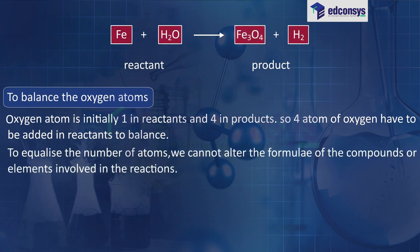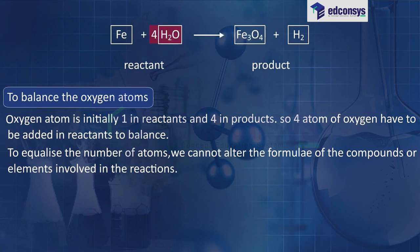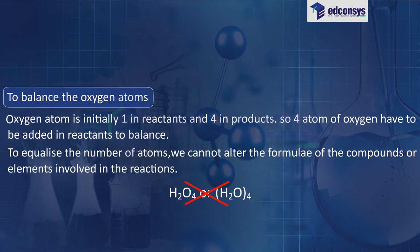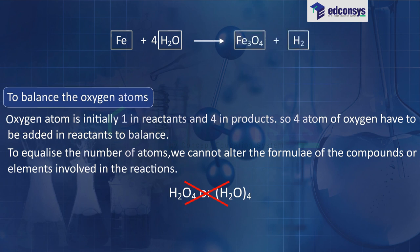So 4 atoms of oxygen have to be added in reactants to balance. To equalize the number of atoms, we cannot alter the formula of the compounds or elements involved in the reaction. To balance oxygen atoms, we put coefficient 4 as 4H₂O, and not H₂O₄. The partly balanced equation becomes: Fe + 4H₂O → Fe₃O₄ + H₂.